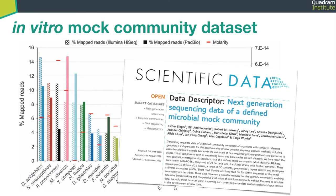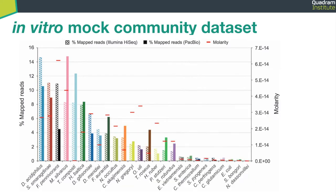Another interesting control are the so-called mock communities. This paper introduces a mock community with 23 bacterial strains and 3 archaea, all chosen because they have a finished genome. This bar plot shows the expected composition of the mix based on the molarity of each genome — look at the red bars representing the molarity — and the observed composition based on the number of sequencing reads mapped on each reference genome. The authors sequenced the mock community with both Illumina and PacBio, which is why we have two bars, and it's nice to see that there is a platform bias.